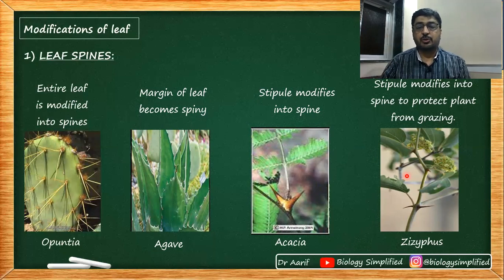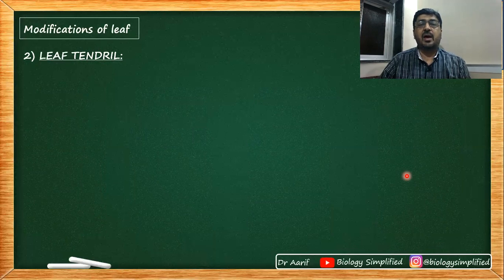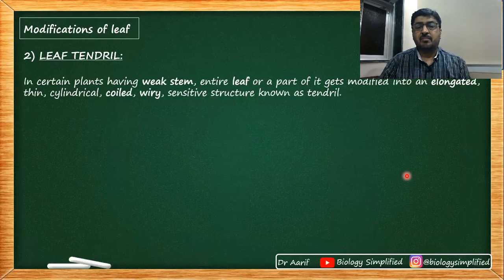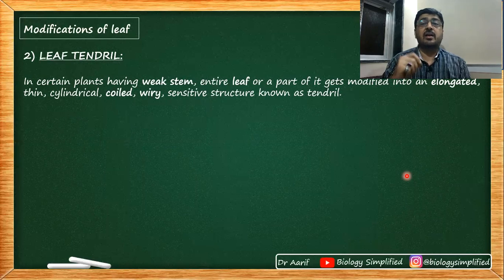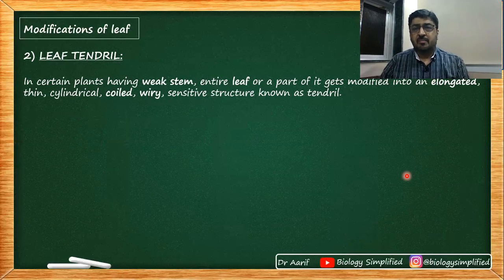The second modification is a leaf tendril — we have already studied stem tendril earlier. In plants having a weak stem, either the entire leaf or a part of the leaf gets modified into an elongated, thin, cylindrical, coiled, wiry, sensitive structure known as a tendril. The purpose of the tendril remains the same — support for the weak stem.